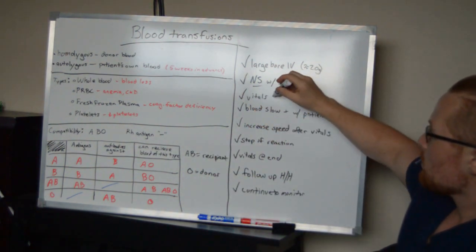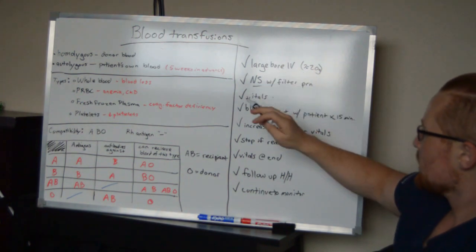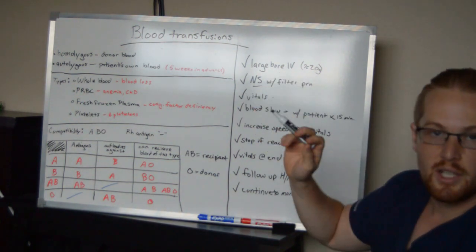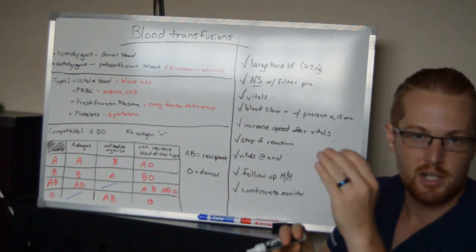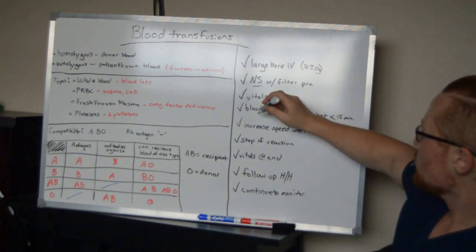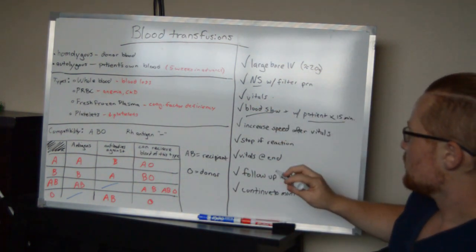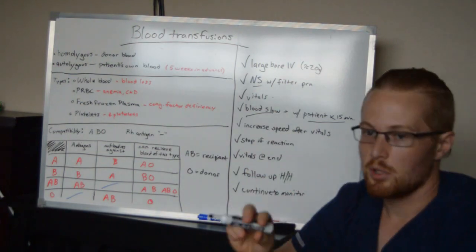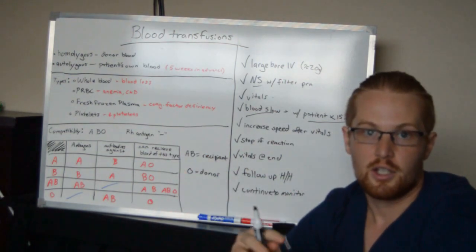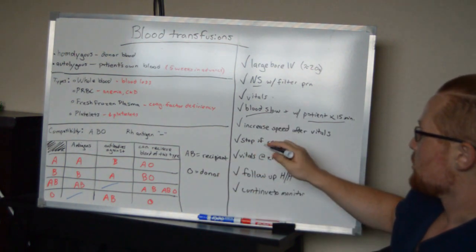You want to get a set of vitals right before the blood transfusion, and this is important because 15 minutes after you start, you want to get another set of vitals and see if there's any change in case there's a reaction. So you want to start the blood nice and slow, and you're going to be in the patient's room for 15 minutes. And before you actually get the blood, you're going to have two nurses to verify that you're giving the proper blood and to the right patient.